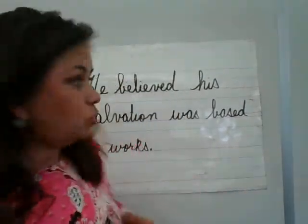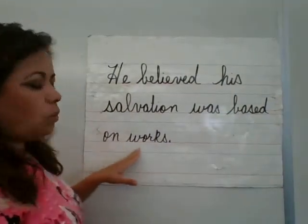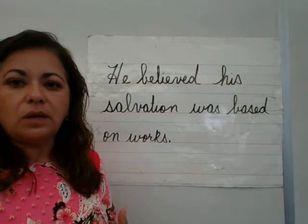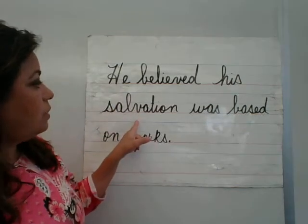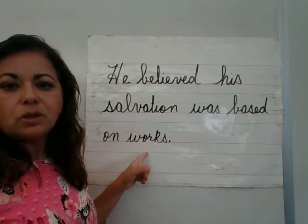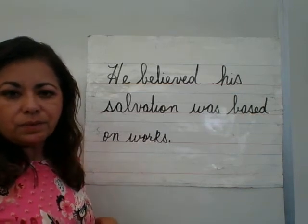So question number two: why was Martin confessing his sins for hours at a time? He would spend hours saying, 'God, I did this and I did this wrong and I shouldn't have done this.' He kept doing that for hours and hours because he thought he had to feel guilty. Number two: he believed his salvation was based on works, so he was working all the time, studying all the time, praying all the time, fasting all the time — his life revolved around that. But it's not based on working. You don't have to do anything to be saved. Go ahead and pause your video.